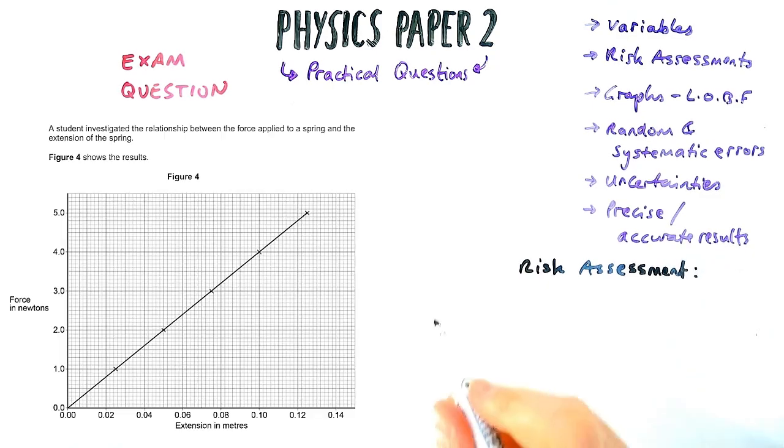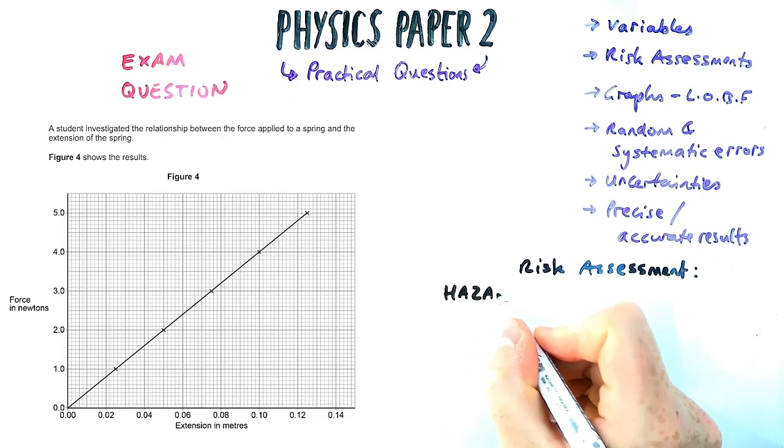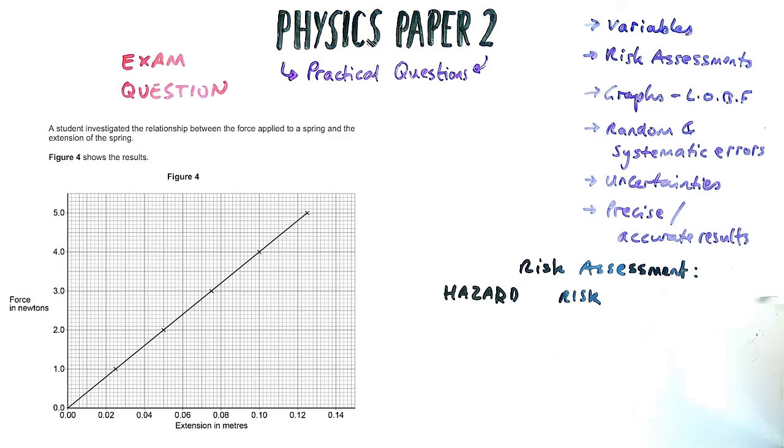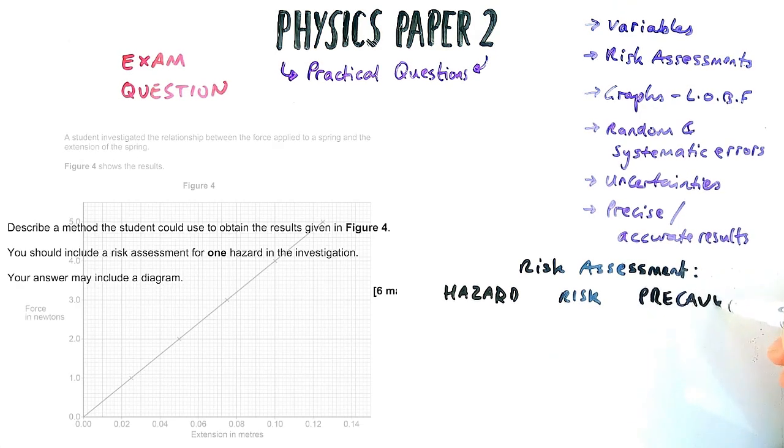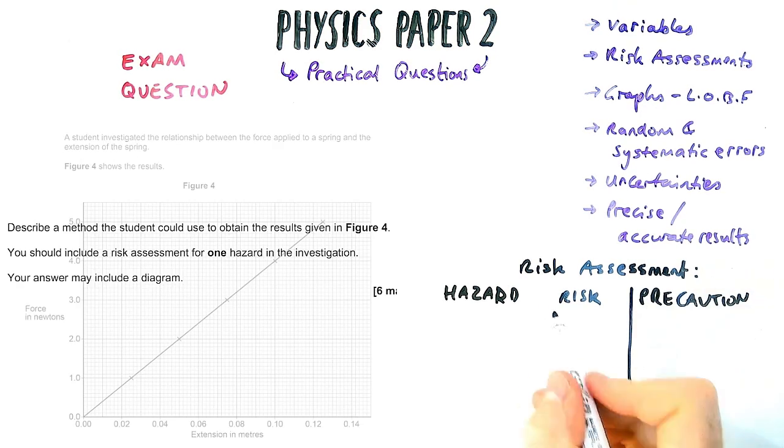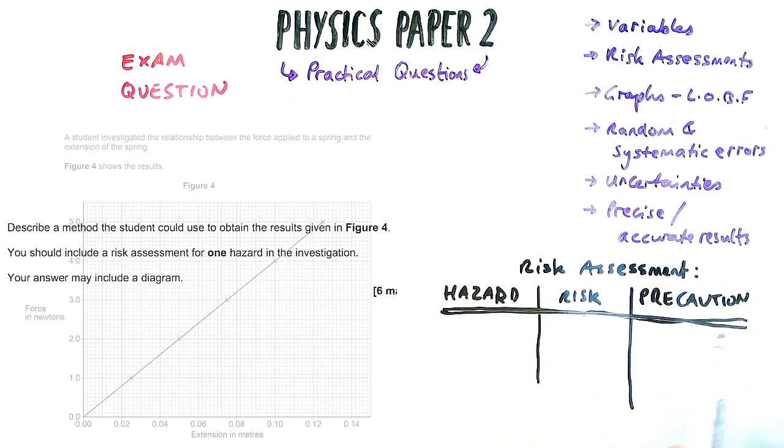Now in general you could be asked in any practical about a risk assessment. A risk assessment contains a hazard, so what is the thing that could go wrong, a risk, what effect could it have on you, and a precaution, so what could you do about it. The last question was a precaution.